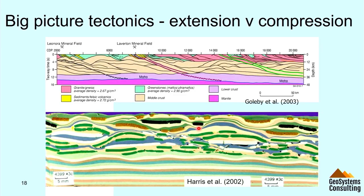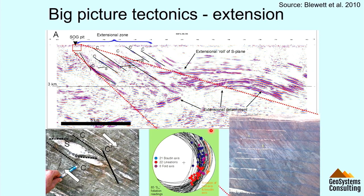My ideas at the time were of a contractional system — fold thrust belts and thrust stacks — but Lyle Harris changed my thinking. He was able to replicate those patterns with the centrifuge, all under extension. He replicated the rock properties of a granite-greenstone belt and spun it, generating the same sort of things. But the real test is what the rocks say. You just walk into the Sunrise Dam pit and see these amazing SC fabrics, extensional shear fabrics — clear as day — rotation of boudins and fold axes into the stretching lineation. You see beautiful fabrics that are imaged in the seismic and go all the way down, and that shear zone links up — all that architecture was developed in that extensional event.